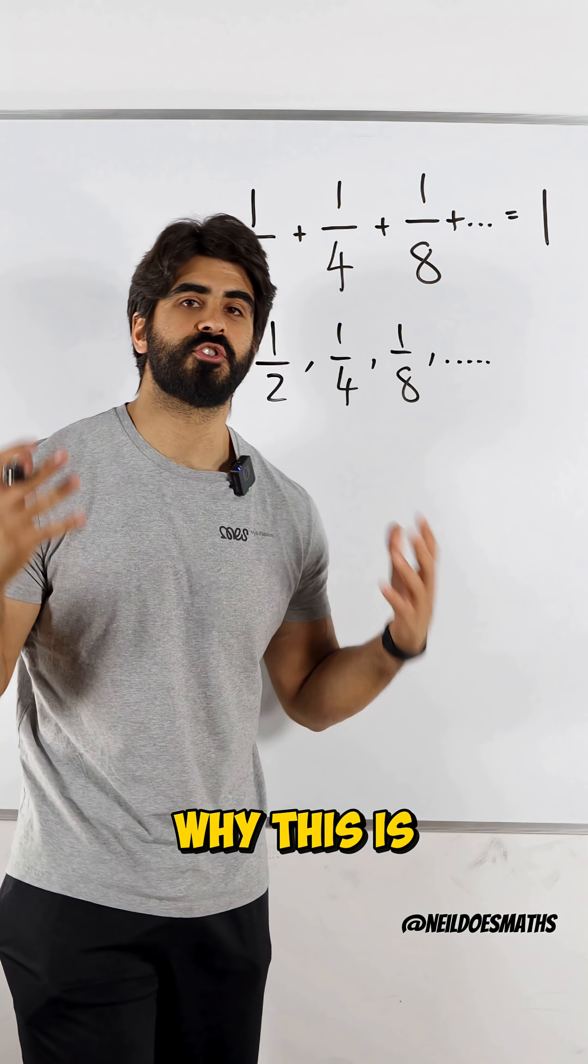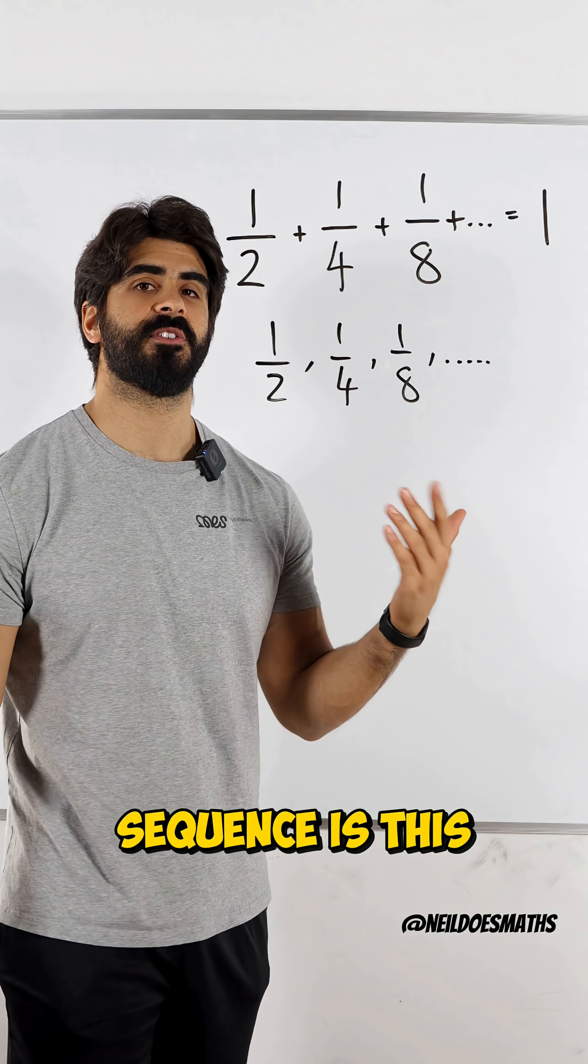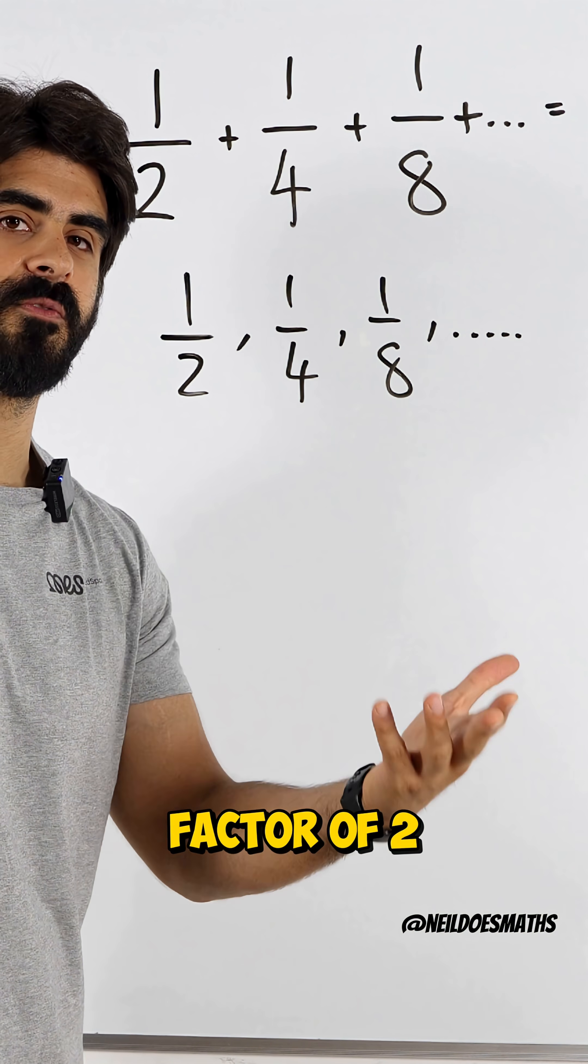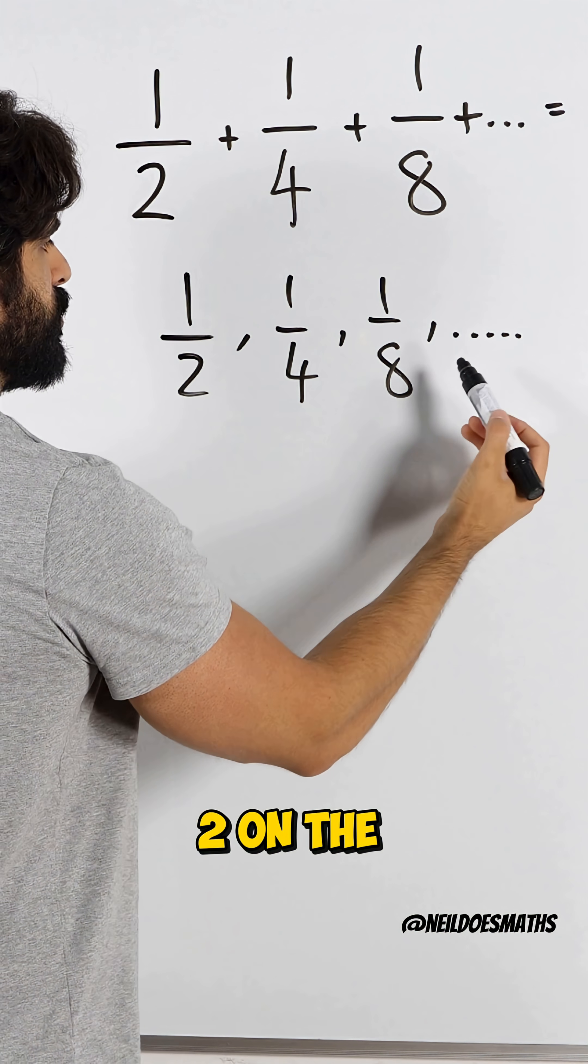Now the reason why this is true is we first need to understand what type of sequence this is. You may notice that the denominator is going up by a scale factor of two, so you're multiplying by two on the denominator.